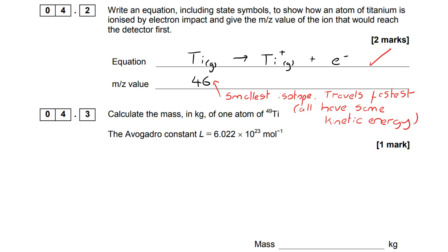We then move on to a calculation. I know what my mass of one mole of titanium-49 would be—it would be 49 grams—but I also know that it contains Avogadro's number of atoms.